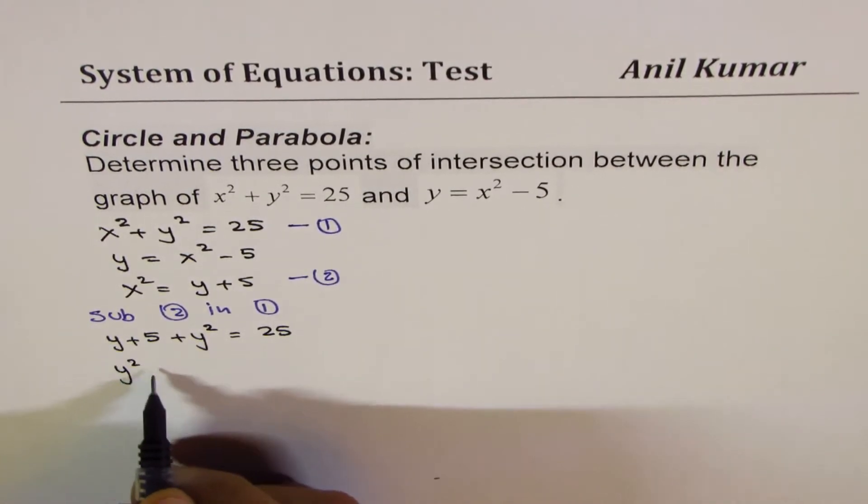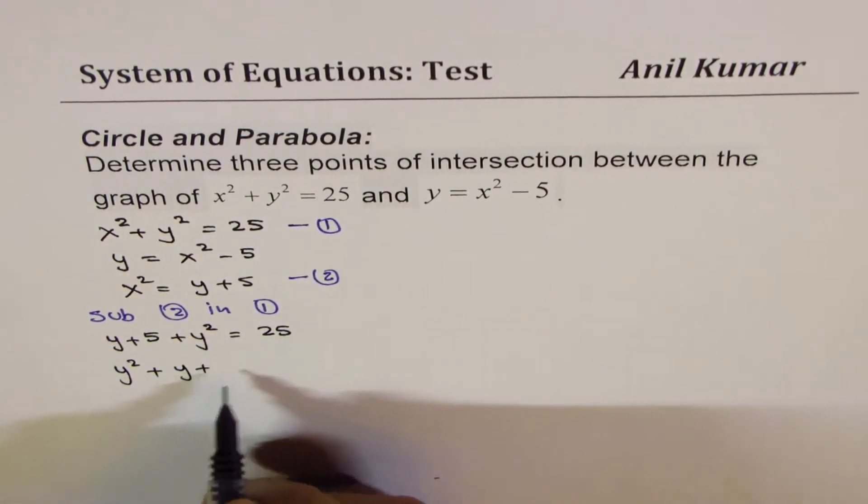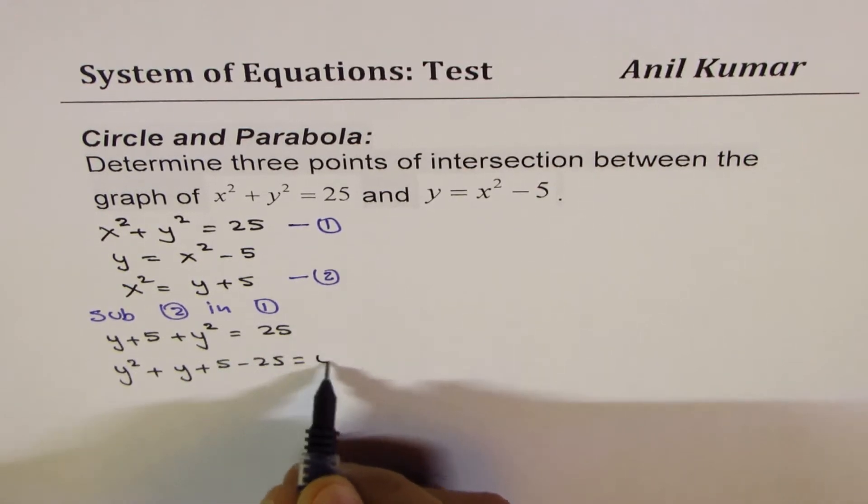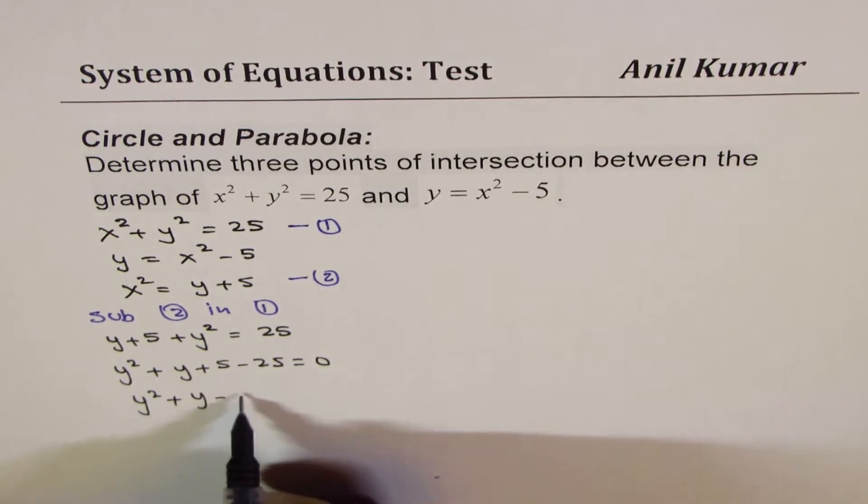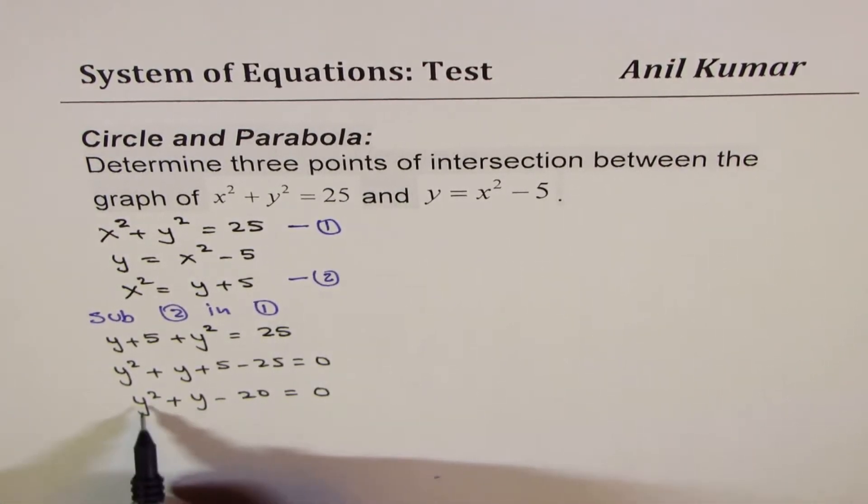Rearranging, we get y squared plus y plus 5 minus 25 equals 0, which could be written as y squared plus y minus 20 equals 0.